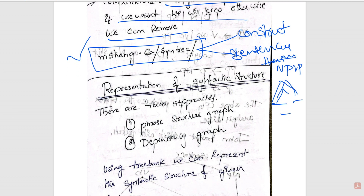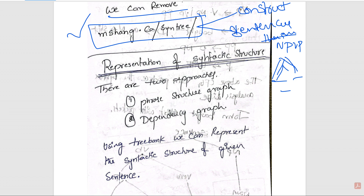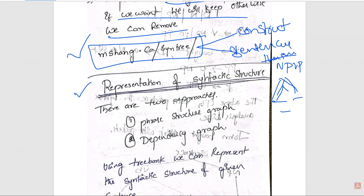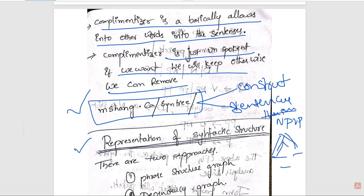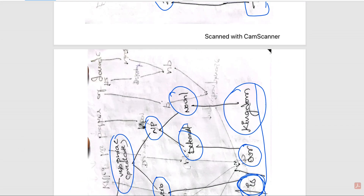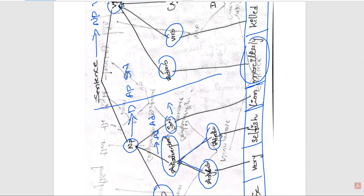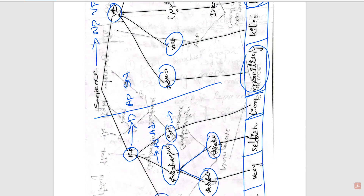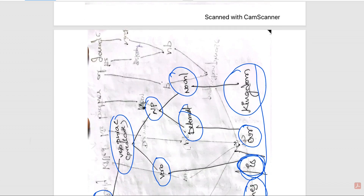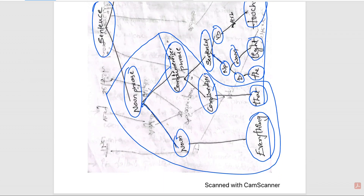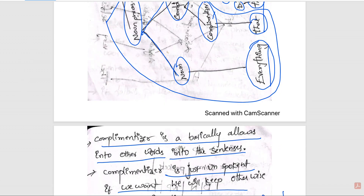In tomorrow's lecture, I will discuss about the representation of syntactic structure. Thank you everyone. I hope everyone understands what a tree bank is and how to construct a syntax tree — a parse tree. There are two ways shown here: one without a complementizer phrase and another with the complementizer phrase. Thank you very much. Please support my channel. Bye-bye.